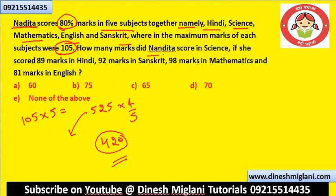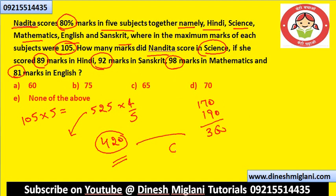How many marks did Nadita score in Science if she got 89 in Hindi, 92 in Sanskrit, 98 in Mathematics, and 81 in English? Add all of them: 89 and 81 gives 170; 92 and 98 gives 190. That totals 360. The difference from 420 is 60. It means she got 60 marks in Science.